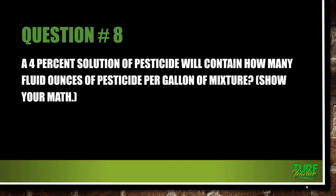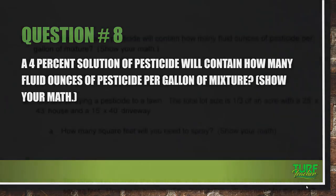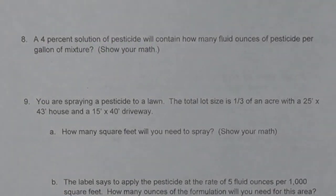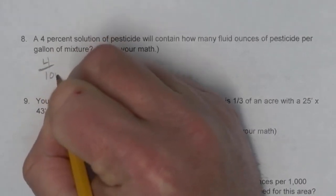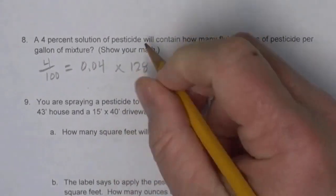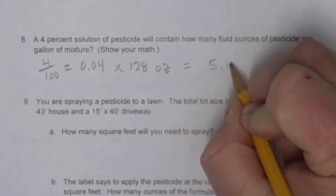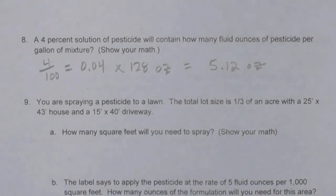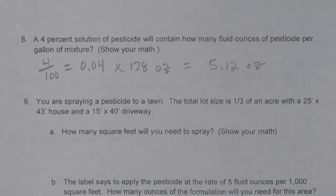Question number eight: a 4% solution of pesticide will contain how many fluid ounces of pesticide per gallon of mixture? You need to know that there are 128 ounces in a gallon — burn that into your brain. So 4% equals 4 over 100, which is 0.04. Multiply 0.04 times 128 ounces per gallon, giving us 5.12 ounces of pesticide per gallon of mixture.